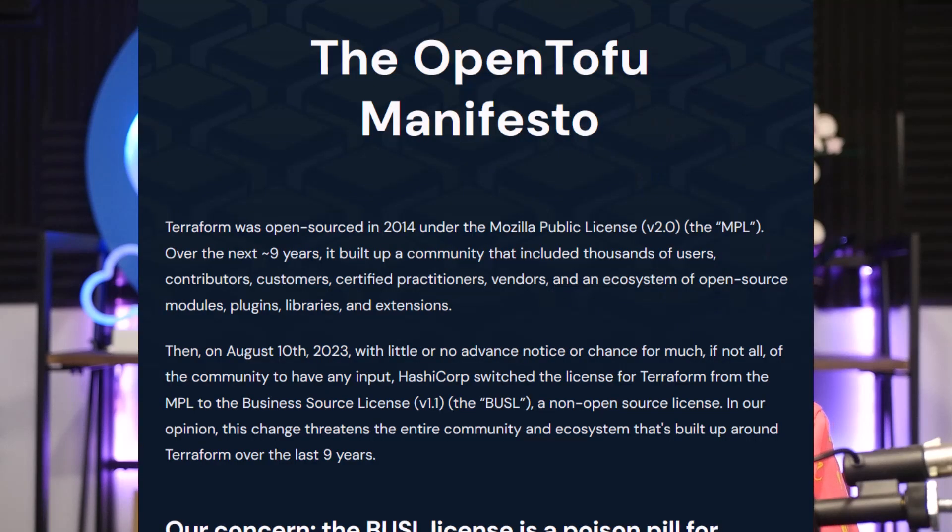So a group of folks in the IAC ecosystem got together and wrote a manifesto demanding that HashiCorp revert back to an OSS license or they would fork Terraform. HashiCorp politely declined, and thus OpenTofu was born. There's a non-zero amount of drama surrounding the birth of OpenTofu, HashiCorp's subsequent response, and general internet sturm und drang — but I'm not going to get into it. Instead, let's look at where OpenTofu is now.